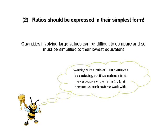But if we reduce it to its lowest equivalent by dividing both sides of the ratio by 1,000, it gives us 1 to 2. And 1 to 2 is a much easier ratio to work with.